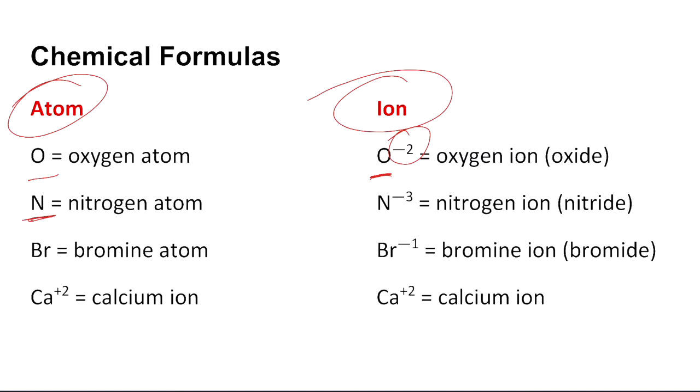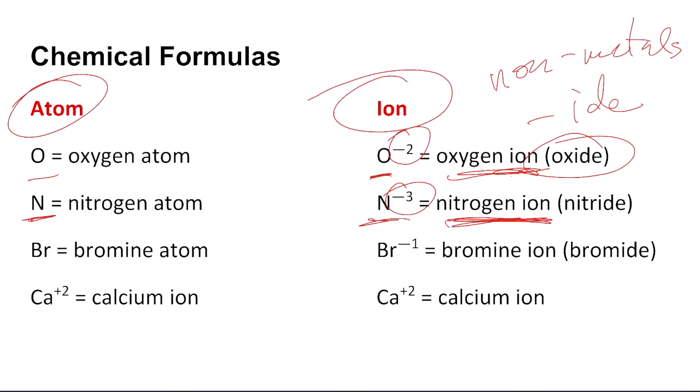When we just write the symbol N, we're referring to the nitrogen atom. But when we write the charge, or the oxidation number, as we're going to eventually learn, the N^-3, we are now referring to the nitrogen ion. The ions of non-metals will have an I-D-E ending. Notice an oxygen ion can be written down as an oxide. A nitrogen ion can also be written as a nitride. A bromine ion can be written as bromide.